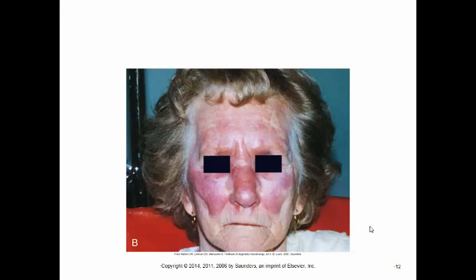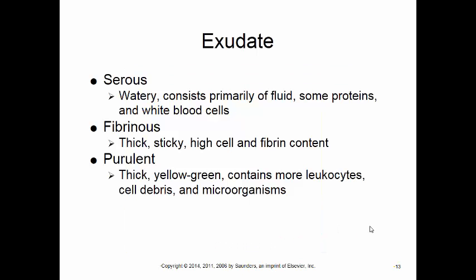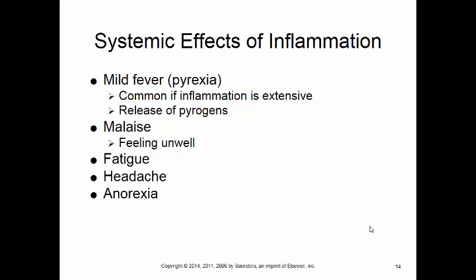Here's an image of a patient with inflammation — you can see the redness, heat, and it would be painful. Along with inflammation, sometimes there is an exudate, which is a fluid. There are a few different types: serous exudate is watery, consisting mostly of fluid with some protein and white blood cells. Fibrinous exudate is more sticky and thick, with high cell and high fibrin content. Purulent exudate is thick and yellow-green — essentially pus — and it contains leukocytes, debris, and often microorganisms. These are all local effects of inflammation, meaning they occur in one area.